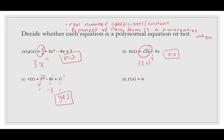Example d: f(x) = 6, a real number constant. There's no variable, but if we were to express the variable it would be x to the zero — since x to the zero equals one — and zero is non-negative. So this qualifies. It's also a special type of polynomial: a monomial.